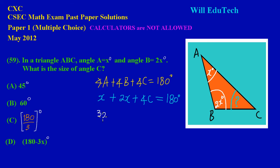We can just go ahead and collect like terms. We have x plus 2x, so that will give us 3x plus my angle at C, which we don't know.